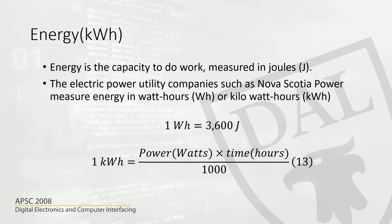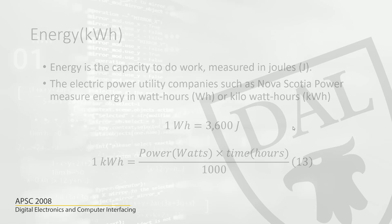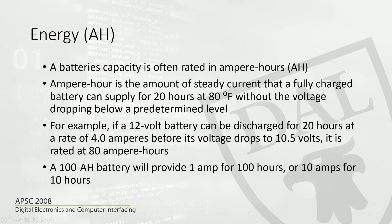You will have to pay Nova Scotia Power by the kilowatt hour for AC power used in household circuits. There is another energy unit used for batteries. Batteries are often rated in ampere hours. Ampere hours is the amount of steady current that a fully charged battery can supply for 20 hours at 80 degrees Fahrenheit.